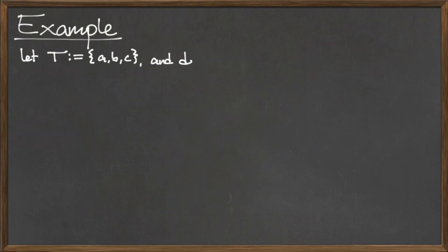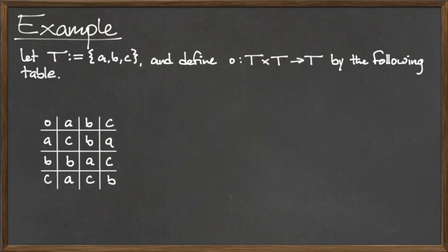As another example, let T be the set containing the elements a, b, and c, and define the binary operation · from T × T to T by the following table.